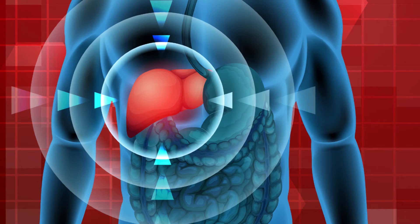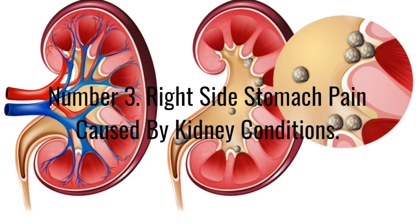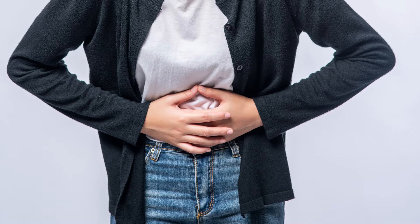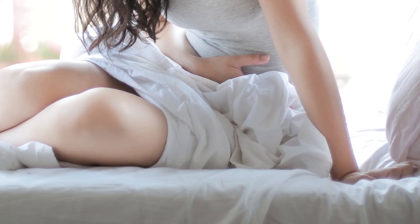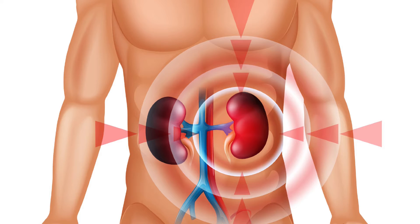Alcoholic and non-alcoholic liver disease can also cause liver pain, but most types of liver disease don't cause any symptoms in the early stages. Number three: right side stomach pain caused by kidney conditions. Pain from the kidneys can also cause pain in the right side of the stomach. These conditions tend to be a dull aching pain, but some kidney conditions can cause intense stabbing pain. You may feel like the pain starts at the back of your stomach or that it comes and goes. Conditions that affect your kidneys include kidney stones, kidney infections, and kidney cancers.